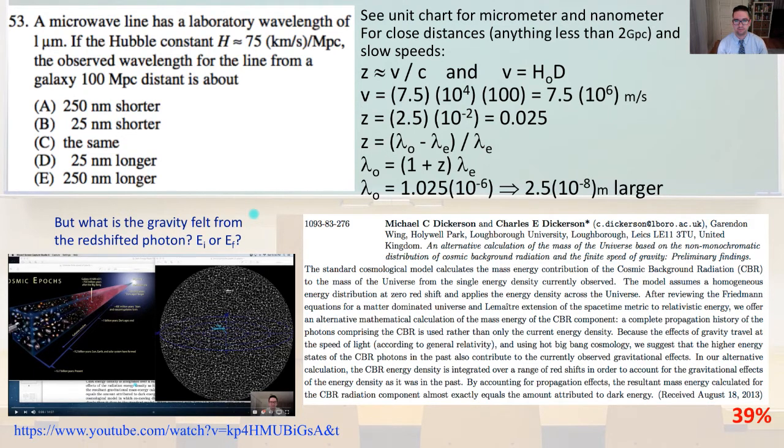which is going to be about anything less than 2 gigaparsecs and slow speeds, we are going to get Z the redshift is about equal to V over C, V being the velocity. And we know that V equals H_0 times D, where H_0 is Hubble's constant. And so V equals 7.5 times 10 to the 4 times 100 equals 7.5 times 10 to the 6 meters per second,